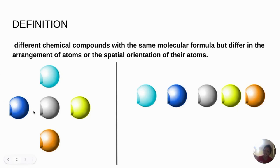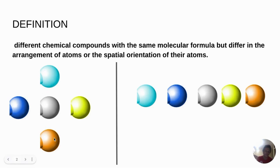Let's say we have five balls with different colors — and we also have here five balls with different colors — but the colors of these balls in this first part are similar to the colors of the balls on the other part. So they have the same colors but their orientation and arrangement are different. If you look at this arrangement, it is in the form of a tetrahedral shape, whilst this one is in the form of a linear shape. So they have the same number of balls but they are different in orientation. The same thing goes when we talk about isomers — these are elements with the same molecular formula but always different in their arrangement.